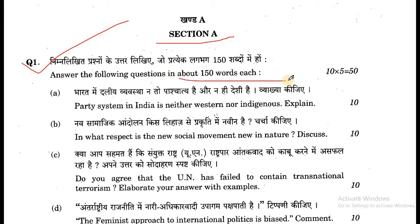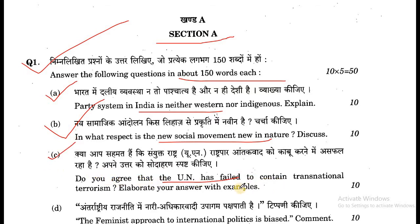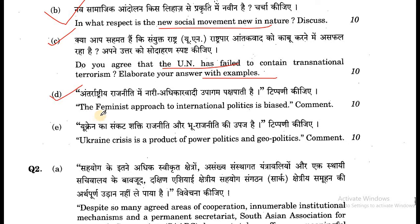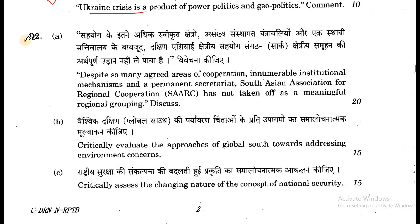Section A. Question number 1: Answer the following questions in about 150 words each. (a) The party system in India is neither western nor indigenous. (b) In what respects is the new social movement new in nature? Discuss. (c) Do you agree that the UN has failed to contain transnational terrorism? Elaborate your answer with examples. (d) The feminist approach to international politics is best. Comment. (e) The Ukraine crisis is a product of power politics and geopolitics. Comment.